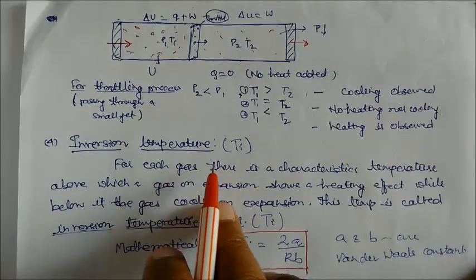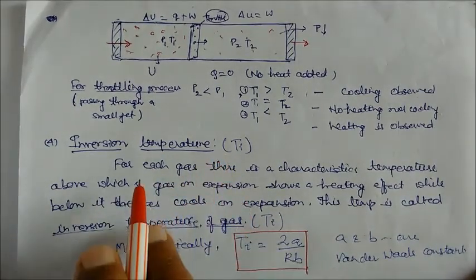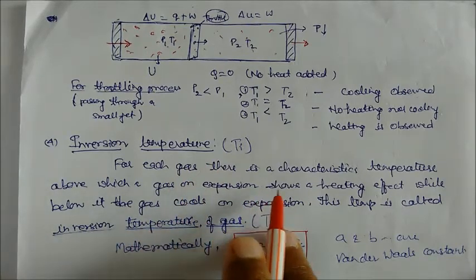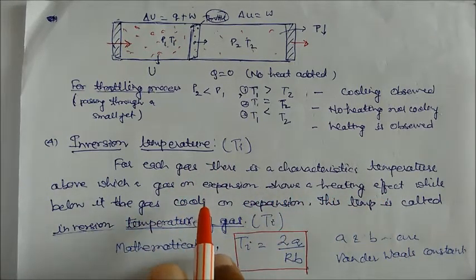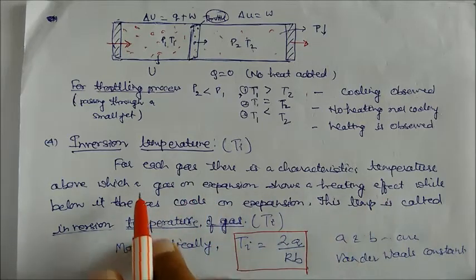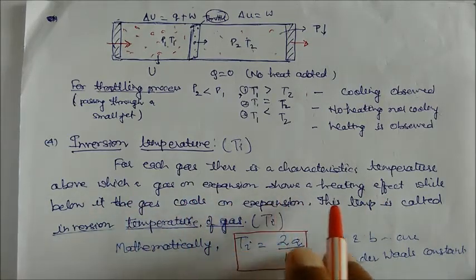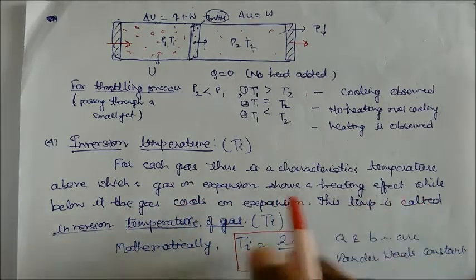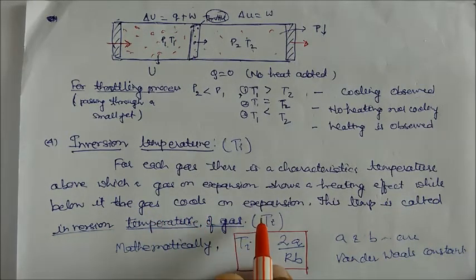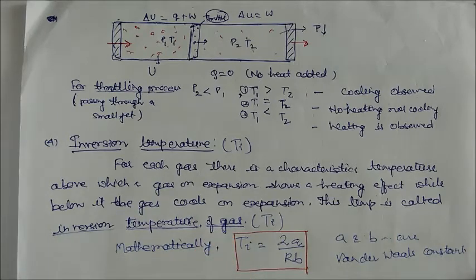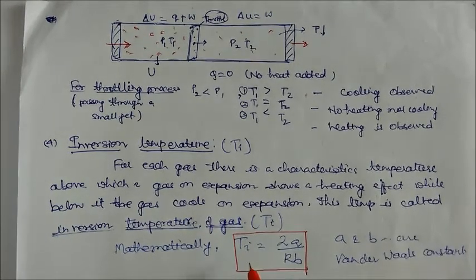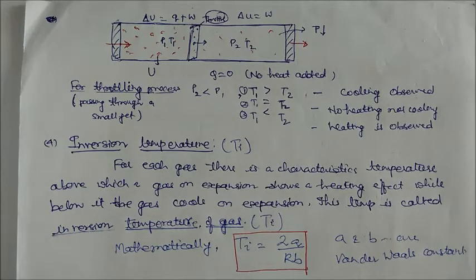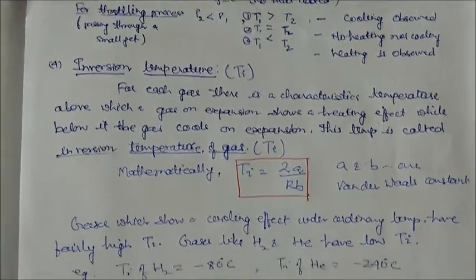The inversion temperature is a characteristic temperature for each gas above which the gas shows a heating effect on expansion, while below it the gas cools on expansion. Mathematically, inversion temperature Ti equals 2A divided by RB, where A and B are the van der Waals gas constants.